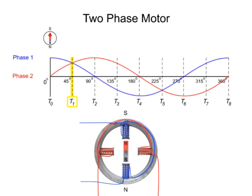At time 1, phase 1 and phase 2 have equal amounts of current flow, which creates a flux between the adjacent poles. This flux causes the rotor to turn 45 degrees to the left.